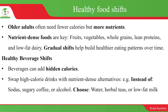Healthy food shifts are basically what you need to live a healthy lifestyle — you shift from bad food choices to healthier food choices. For example, older adults often need fewer calories but more nutrients. Nutrient-dense foods are key to achieving healthy food shifts: fruits, vegetables, whole grains, lean proteins, and low-fat options. When shifting to healthy foods, you need to do it gradually, as gradual food shifts help build healthier eating patterns over time.